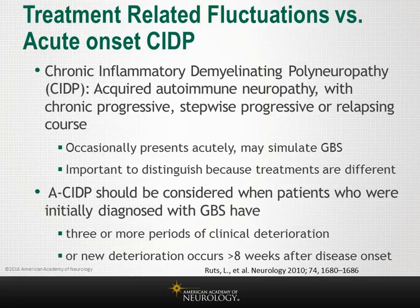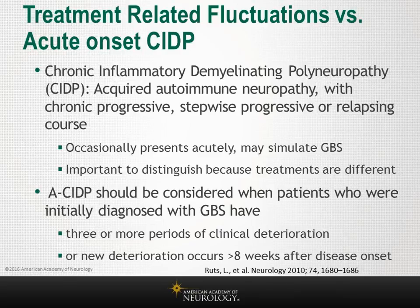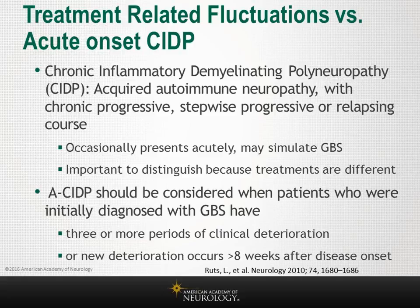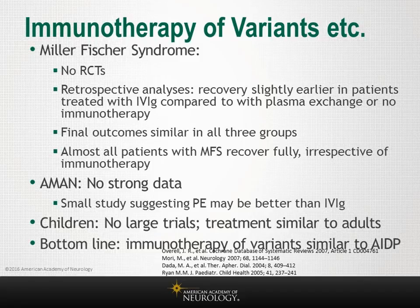When treatment-related fluctuations occur, it is important to consider acute-onset CIDP — chronic inflammatory demyelinating polyneuropathy that can present acutely. Acute CIDP should be considered when patients initially diagnosed with GBS have three or more periods of clinical deterioration, or if deterioration occurs eight or more weeks after disease onset. Clinical clues include less severe weakness, maintained ability to ambulate at the worst point, and absence of cranial nerve dysfunction. This differentiation is important because treatments differ.